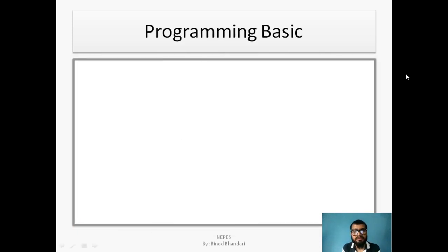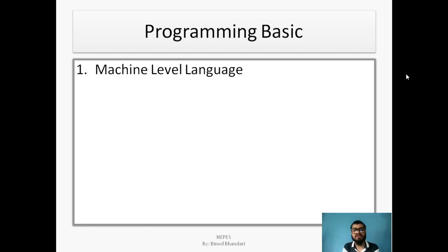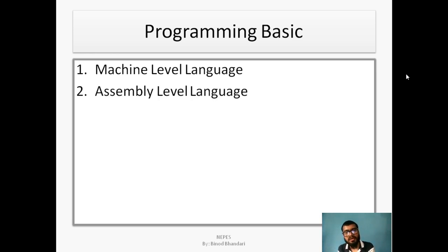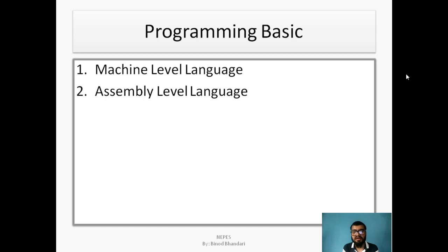Now, programming basics. The first is machine-level language — machine codes consisting of 0 and 1. Next is assembly-level language, which consists of many mnemonics like ADD, SUB, etc. These mnemonics are finally converted into machine-level language, 0 and 1.